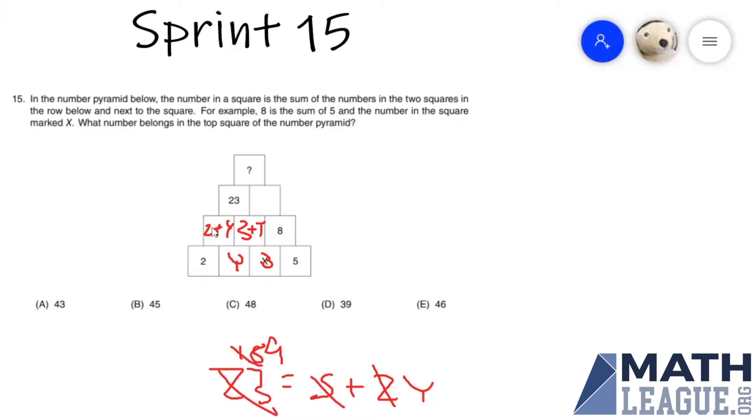So from here, we can replace two plus y with 11, and three plus y with 12. And from here, we get that 12 plus eight, so the number here has to be 20, because it's the sum of 12 plus eight.